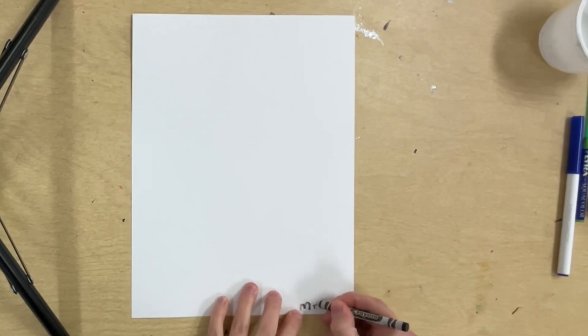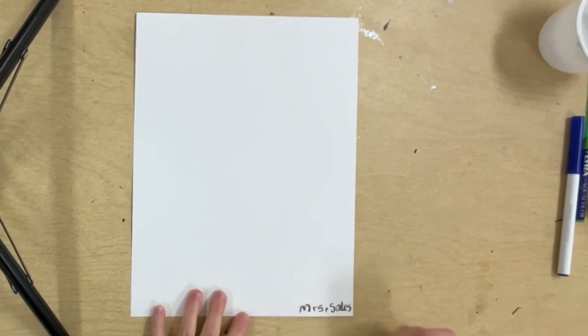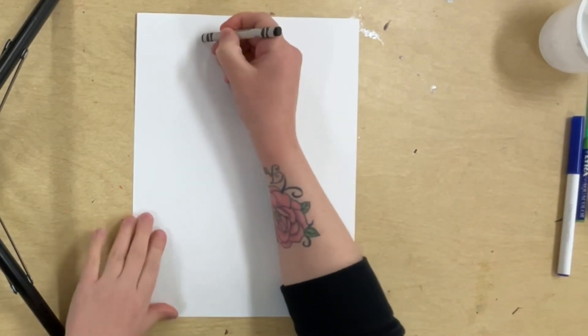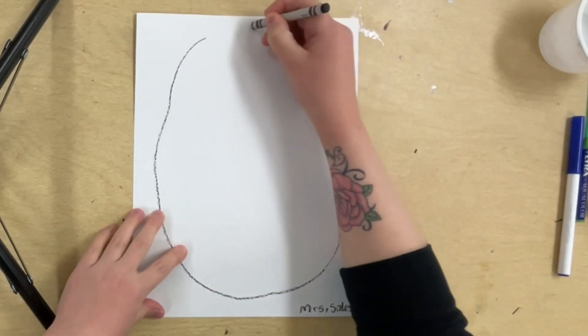The first thing I'm going to do is write my name on my paper with my black crayon. And then when I'm done writing my name, I'm going to draw a big imperfect oval on my paper. And remember to make it big. Fill up your whole paper with this imperfect oval.